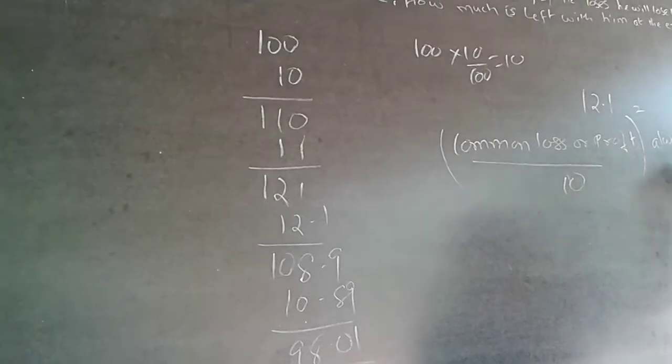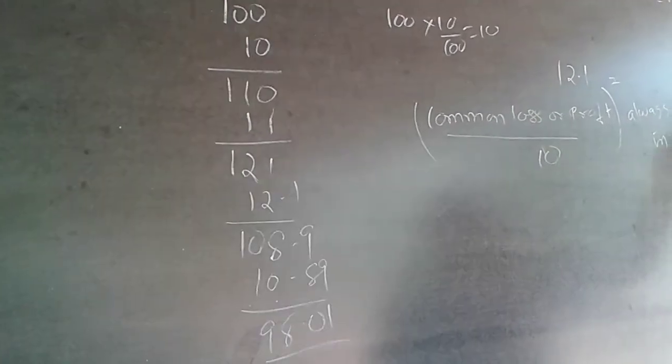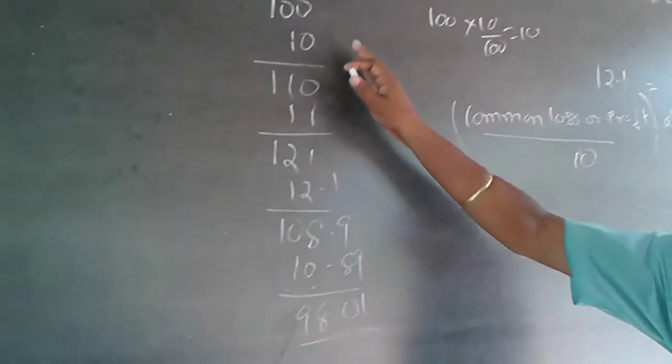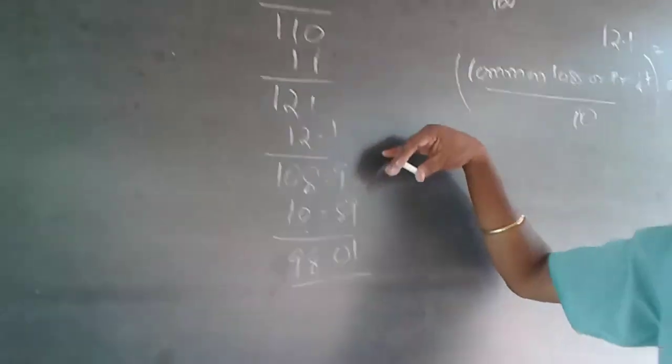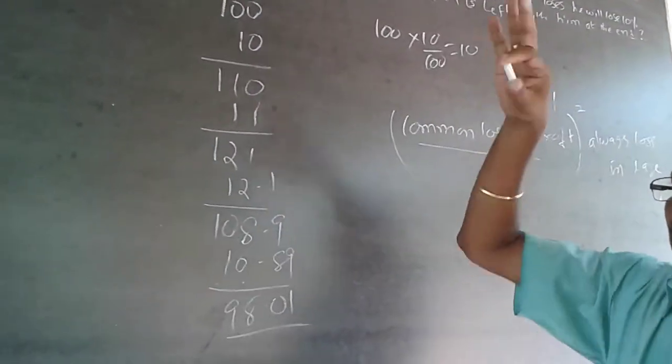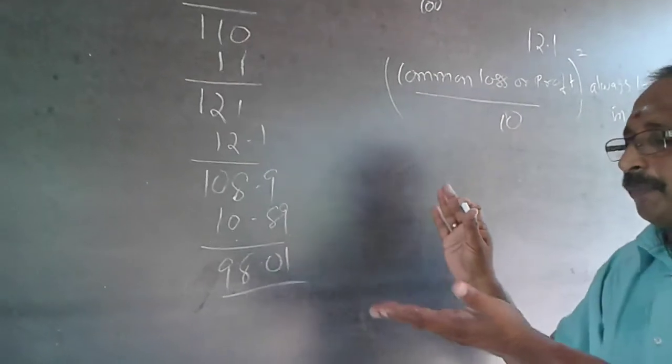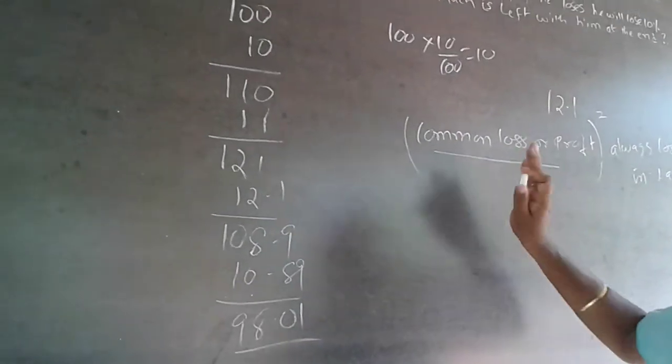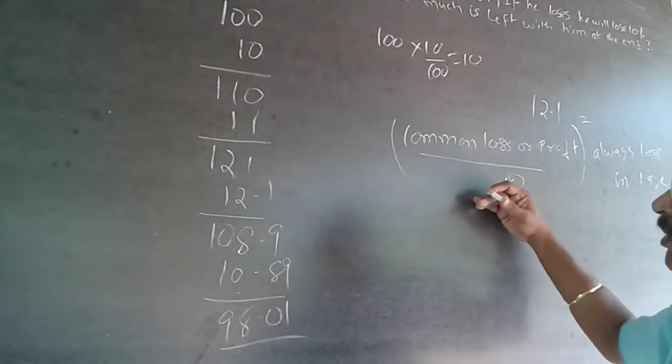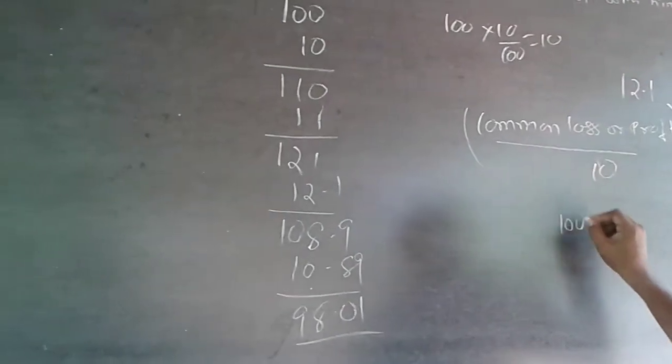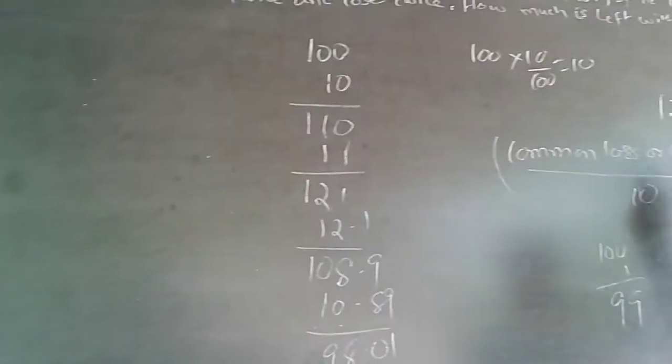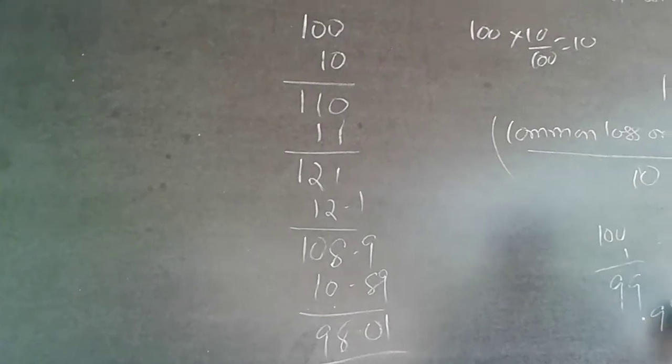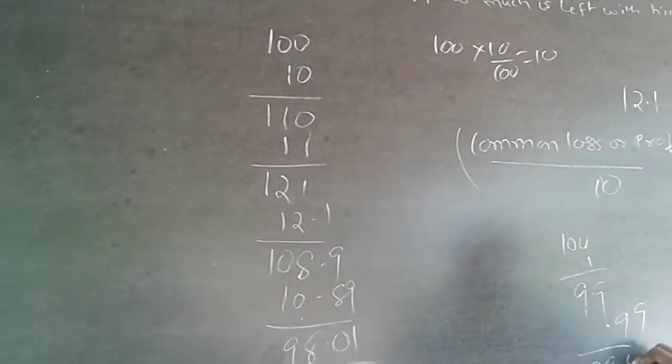The same logic is applicable here. Going up, coming down, going up, coming down. Here also when I make profit I go up, and when I make loss I come down. So the same logic you can use: 10 by 10, 1% loss. So 100 minus 1 will become 99. Again 10, and then final net loss it will be 98.01.